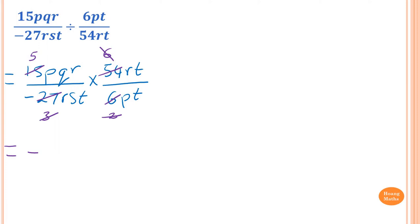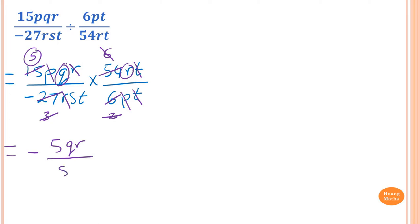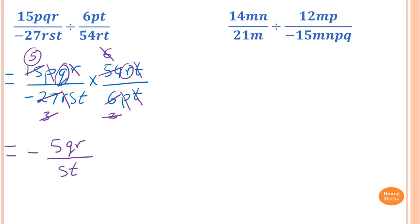Now simplify the pronumerals: r cancels with r, t cancels with t, and p cancels with p. So we are left with 5qr over st.